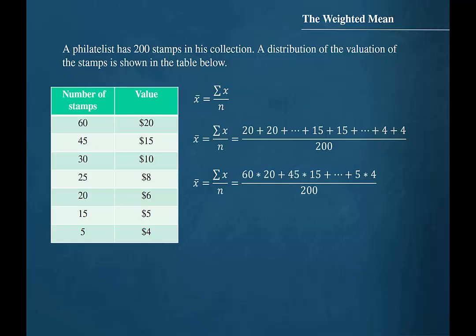But if we think about this for a second, that would be the same as multiplying 60 by 20 and then adding that to the product of 45 and 15 and continuing this process down to 5 times 4, and then again divide that sum by 200.